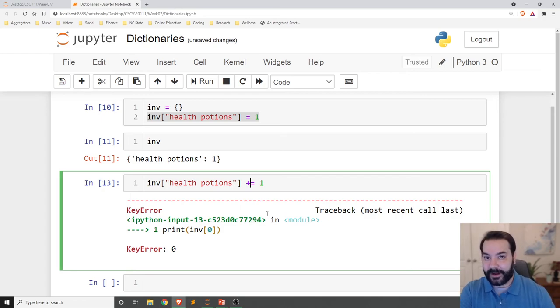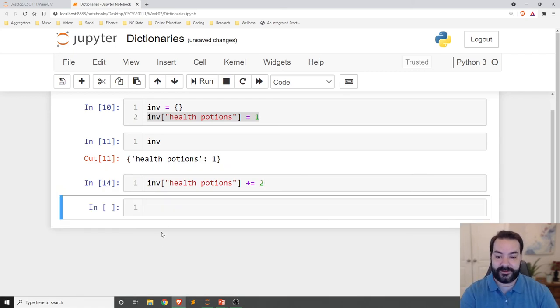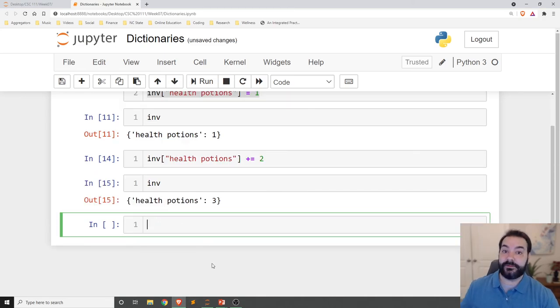Say, for example, since I have an entry for health potions, I can use our augmented assignment operators to add to that entry. Let's say we've gone through the level and we found two health potions. So we're adding to our inventory. Boom. And if we take a look at our inventory one more time, you can see that we still have now we have health potions, but three.